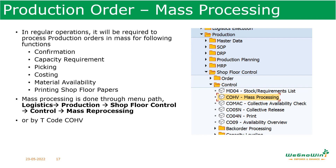Next is mass processing. In regular operations, we need to process a lot of production orders — not just one or two daily but many. Activities like production order confirmation, capacity requirement planning, picking, costing, material availability check, and printing shop floor orders all need to be done. These things can be done through mass processing using transaction COHV. Other related transactions include COMAC for collective availability check, CO05N for collective release, CO04N for printing, and CO09N for availability. For collective processing, there are many individual transactions available as well.